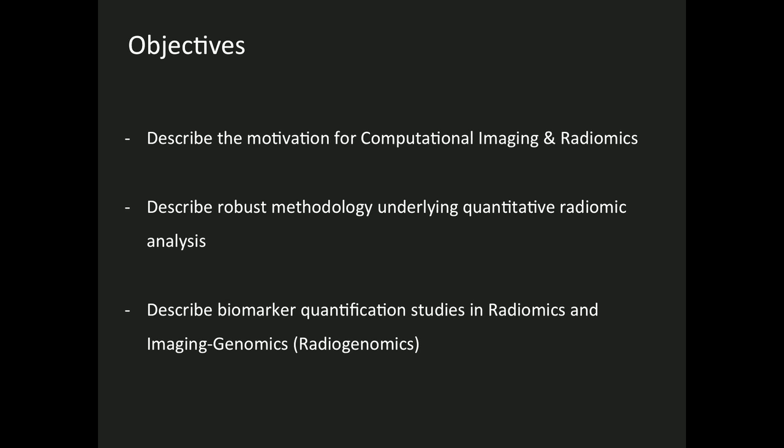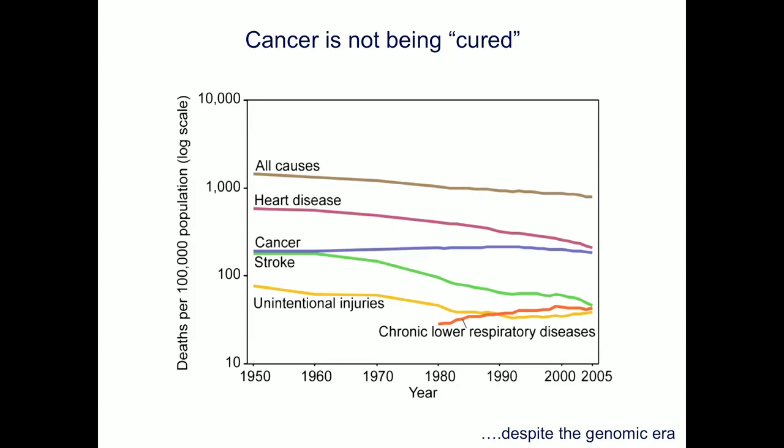For people not in the cancer field: we are not curing cancer now. Despite the genomic era, and with new advances in immunotherapy and targeted therapies, overall cancer remains a very difficult disease to tackle. One of the most important challenges is intratumor heterogeneity — a tumor is not a homogeneous bulk of cells; it is a very heterogeneous disease.